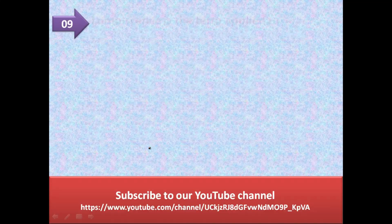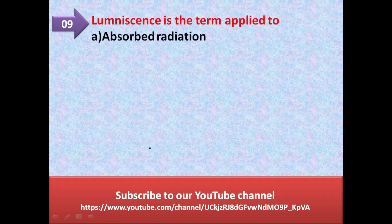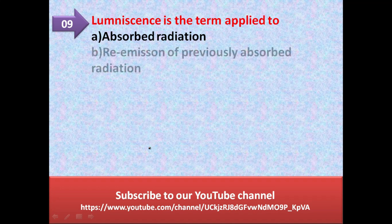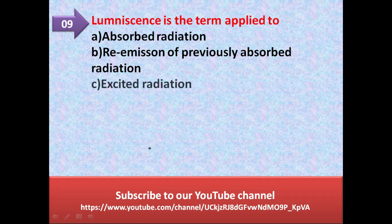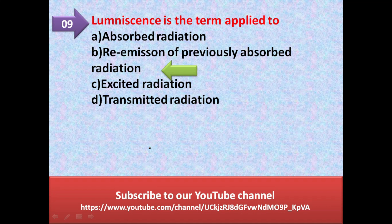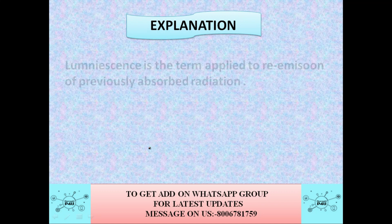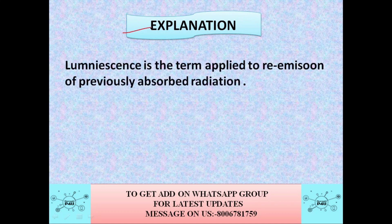Next question: luminescence is the term applied to — option A is absorbed radiation, option B is re-emission of previously absorbed radiation, option C is excited radiation, option D is transmitted radiation. The correct answer is option B: luminescence is the term applied to re-emission of previously absorbed radiation.